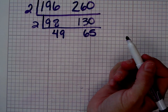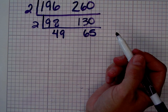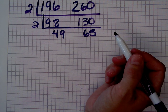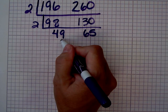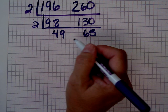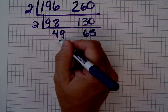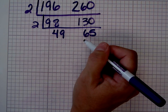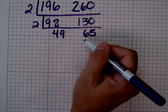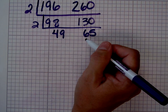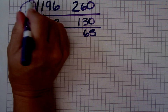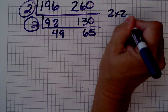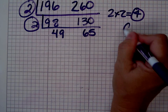Let's see — can I take anything else out of them? Can I take a three? I'm not sure. Let's check the digital root: four plus nine is thirteen, one plus three is four. So I can't take a three out of forty-nine. How about a four? That would just be two. I can't take a five, seven, eight, nine, ten, eleven, or thirteen out either. So my greatest common factor of these two big numbers is simply four.